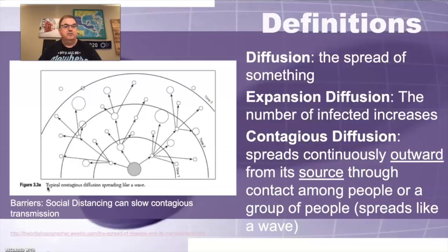There are barriers that can slow down or stop the spread of something spreading contagiously. Right now, we're involved with a lot of social distancing going on. And this is something that they're trying to do to slow down the contagious transmission of this by decreasing the number of interactions that we have with each other.